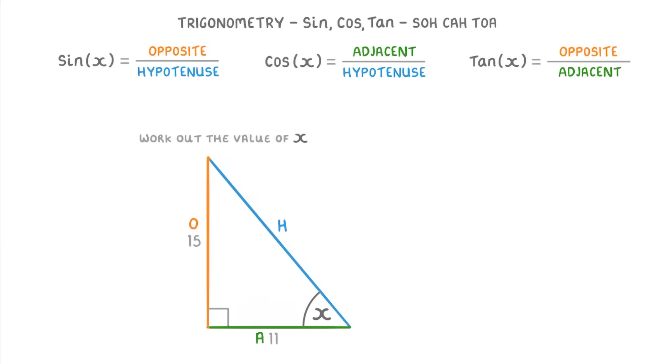The next thing to do is note which sides you know the length of. And in this case, we know the length of the opposite, which is 15, and the adjacent, which is 11. But we don't know how long the hypotenuse is, and we don't need to find out either.